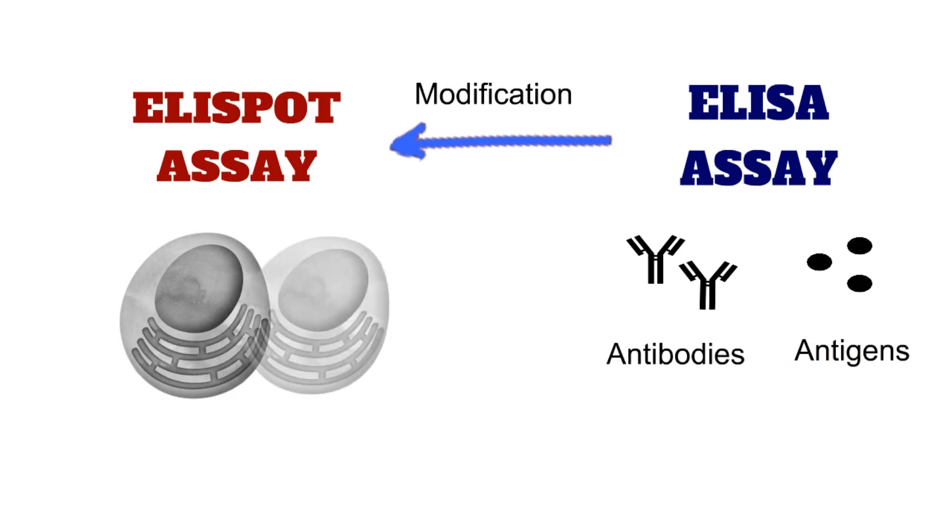Whereas ELISPOT assay is used to detect the cells which produce specific antigen or antibodies. So this is the basic difference between ELISA and ELISPOT assay. So let us discuss the ELISPOT assay in detail.